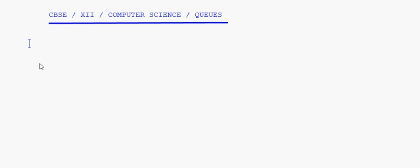Let's take up deletion in a queue today. We've seen how to insert elements into an array queue; now let's see how to delete elements. As already mentioned, this follows the FIFO concept — that is, First In First Out.